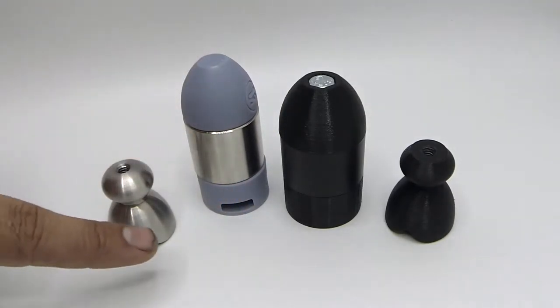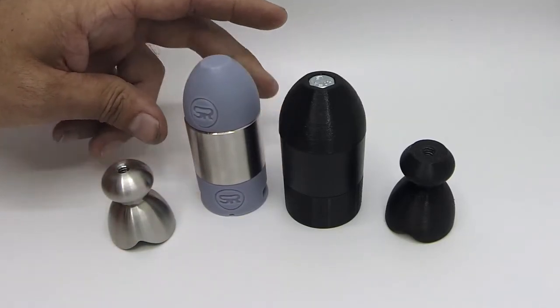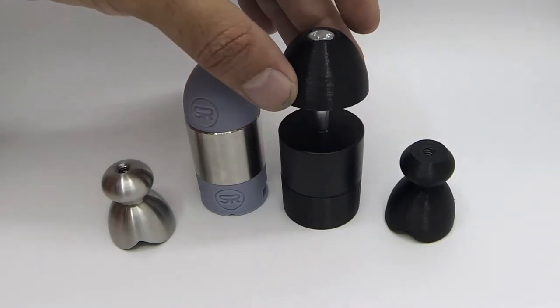We can see the premium weight spacer has a slot for the strap where the economy does not, although you can still use the safety strap with either. The slot just makes it a little easier.